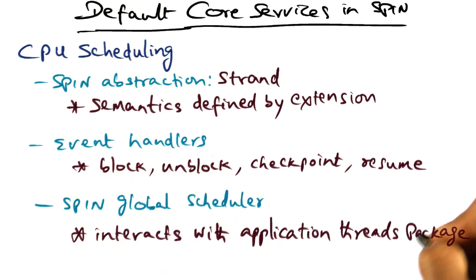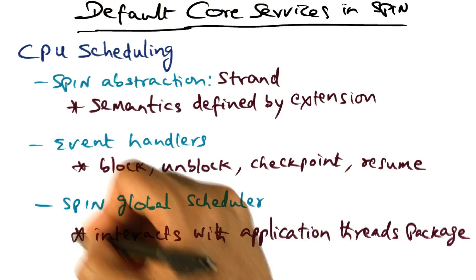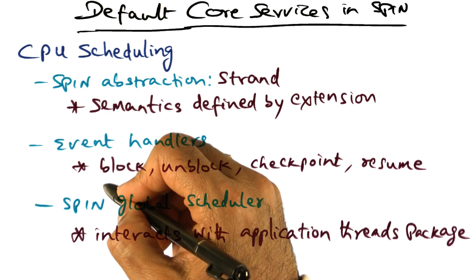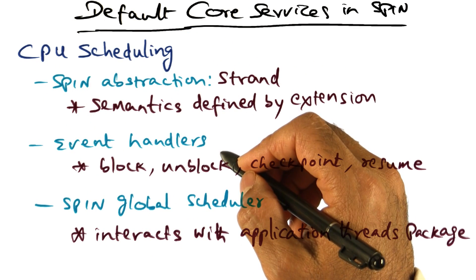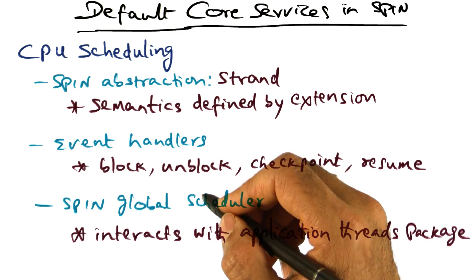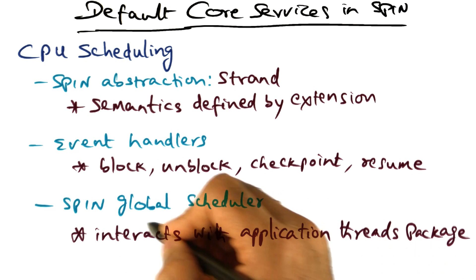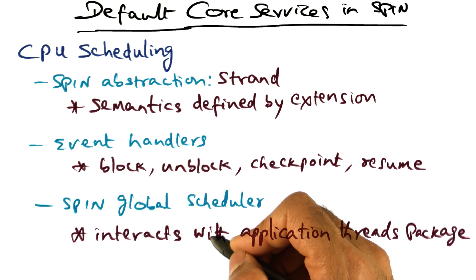In a nutshell, what Spin provides are exactly the kind of primitives that may be needed by an extension wanting to provide the service of CPU scheduling. Spin only provides the interface function definitions; the semantics are entirely up to the extension. All that Spin does is ensure that the extension gets time on the CPU through the global scheduler, which allocates time to different extensions that may be concurrently living on top of Spin.